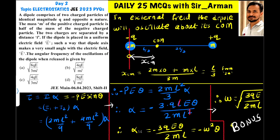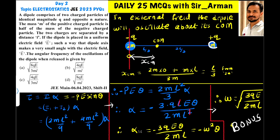A dipole comprises two charged particles of identical magnitude q and opposite in nature. The mass m of the positive charge particle is half the mass of the negative charge — so the positive charge has mass m and the negative charge has mass 2m. They are separated by distance l. For a system to be a dipole, their charges should be equal and opposite, irrespective of their masses.